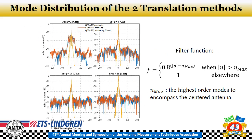This slide shows the mode distribution for the two different translation methods. The x-axis is the mode and the y-axis is the power associated with each mode. The yellow line is the filtered data, the orange line is the ray-based approach, and the blue line is the quasi-far field to far field, the more rigorous approach. The correlation between the two methods is very good, especially after filtering — which is what we are after. We're interested in the antenna pattern without the reflections, and after filtering, these two methods give very close results.